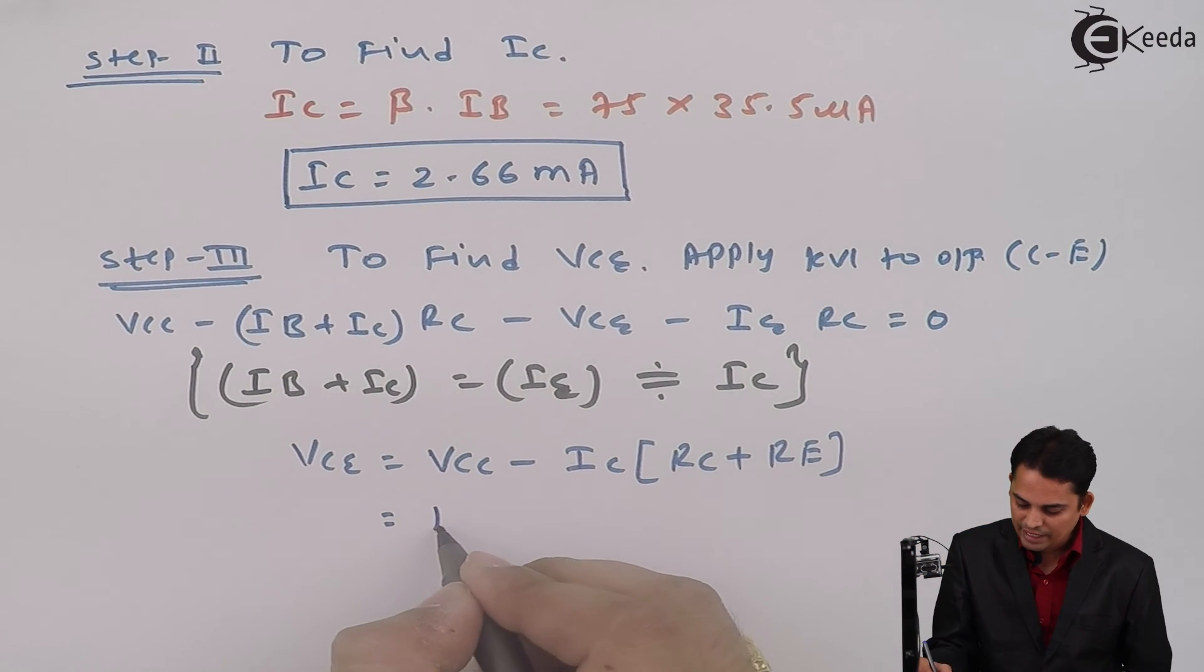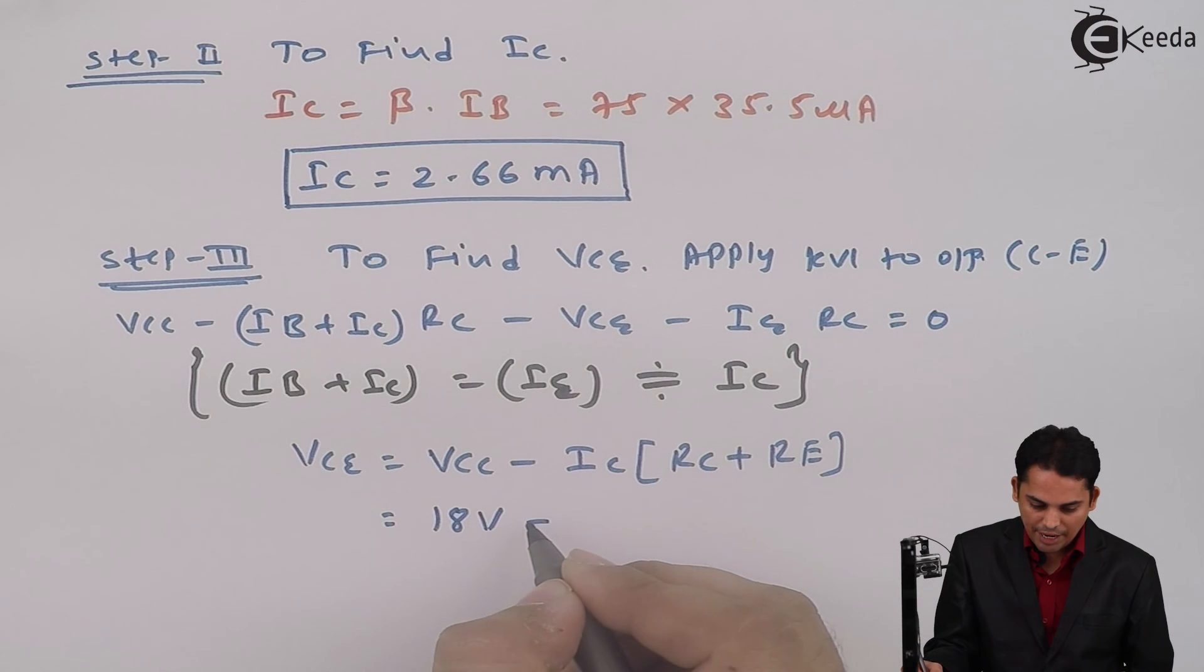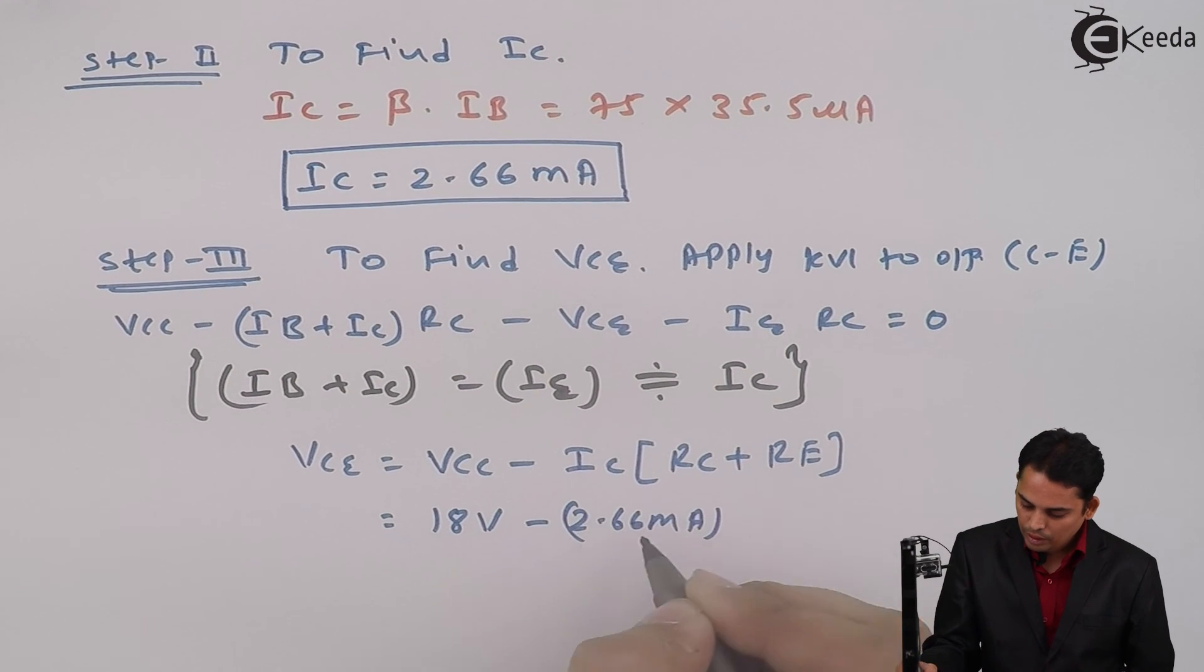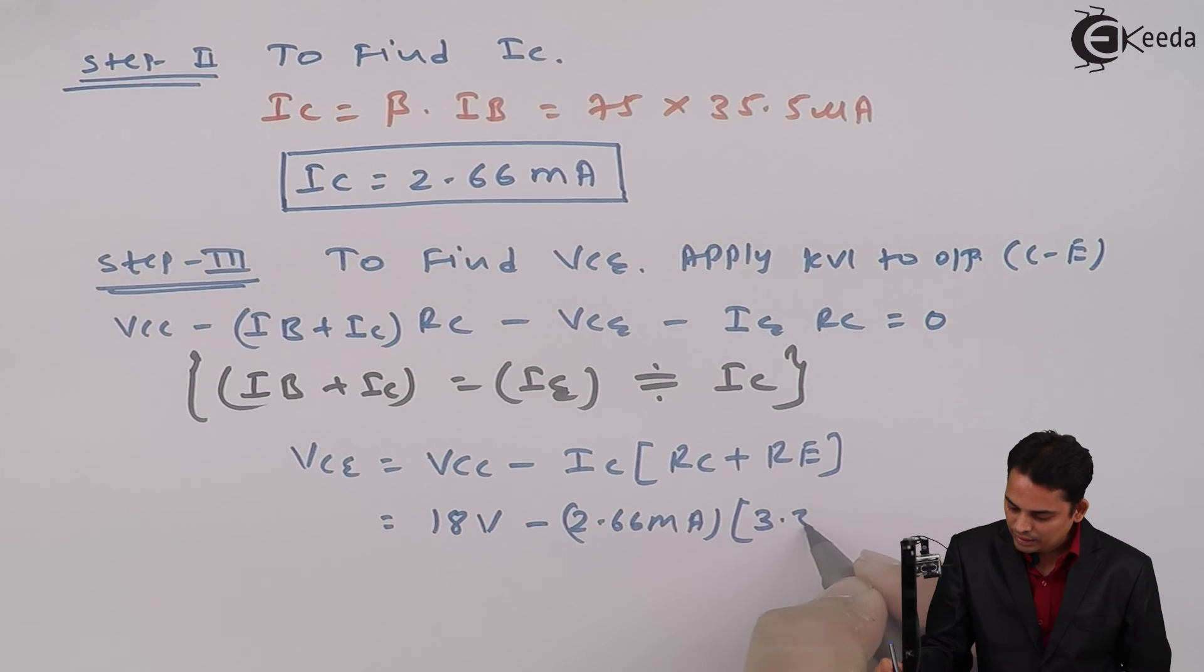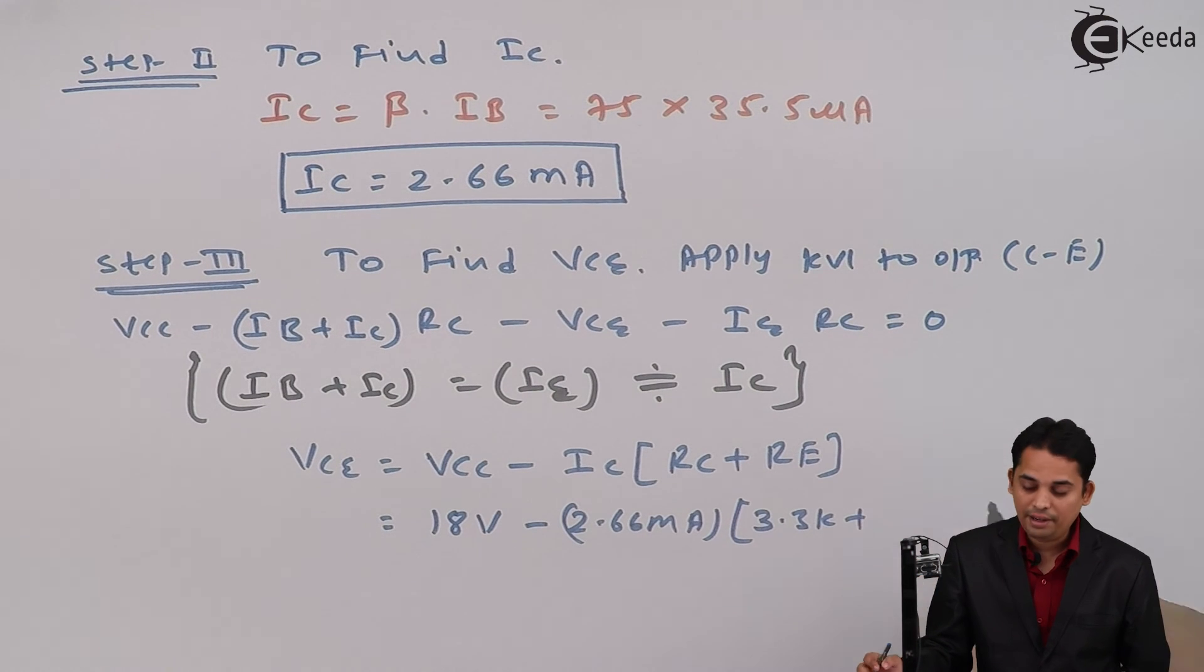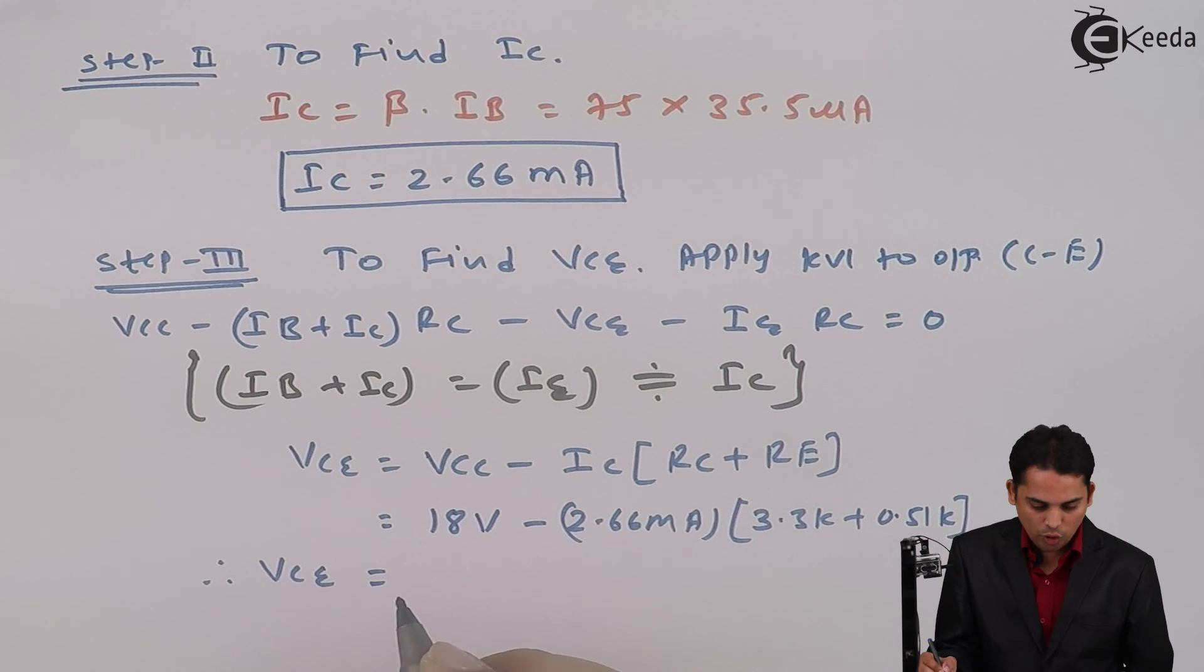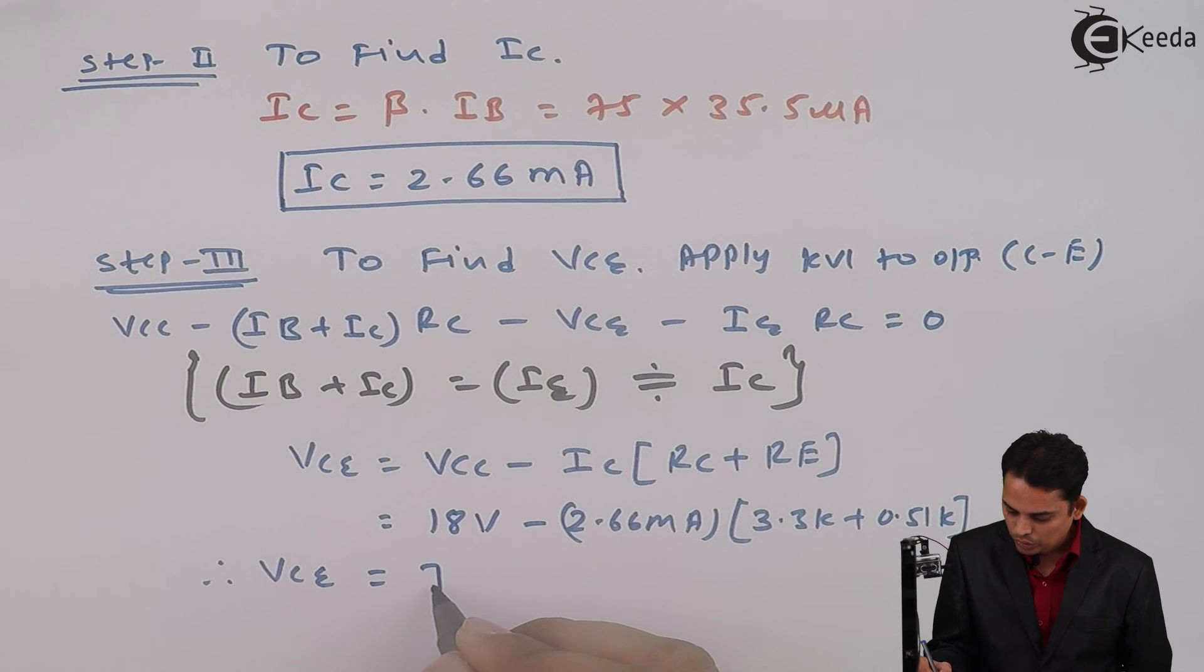And hence I can write VCE is equal to VCC minus IC into (RC + RE). VCC is given as 18 volts, IC is 2.66 milli amperes multiplied by RC is 3.3K plus RE is 0.51K. And hence VCE is equal to 7.86 volts.